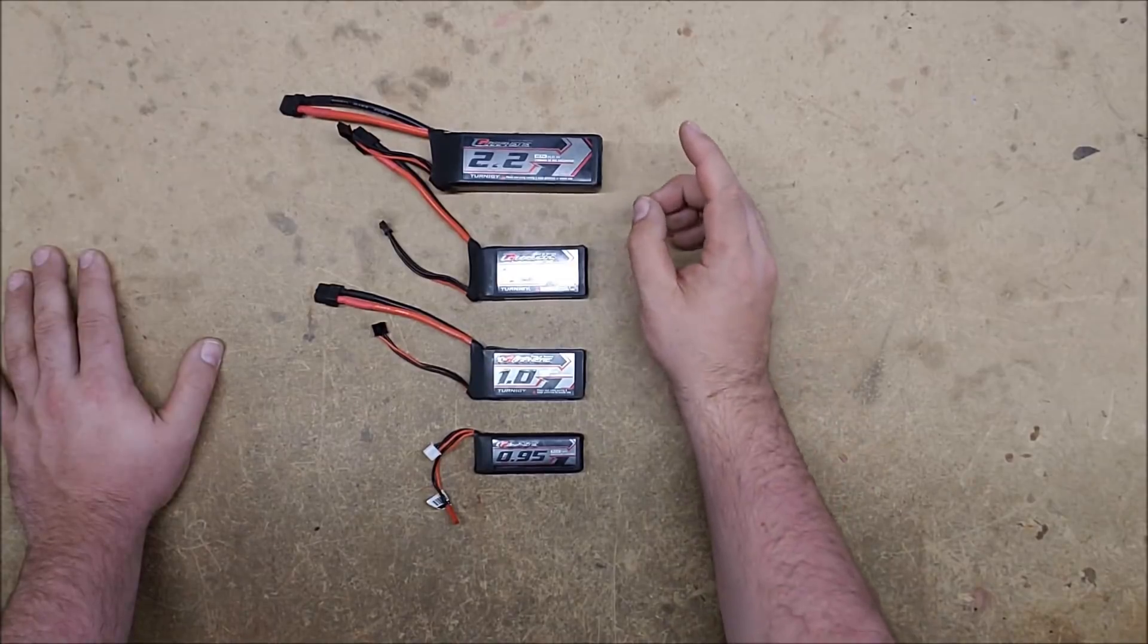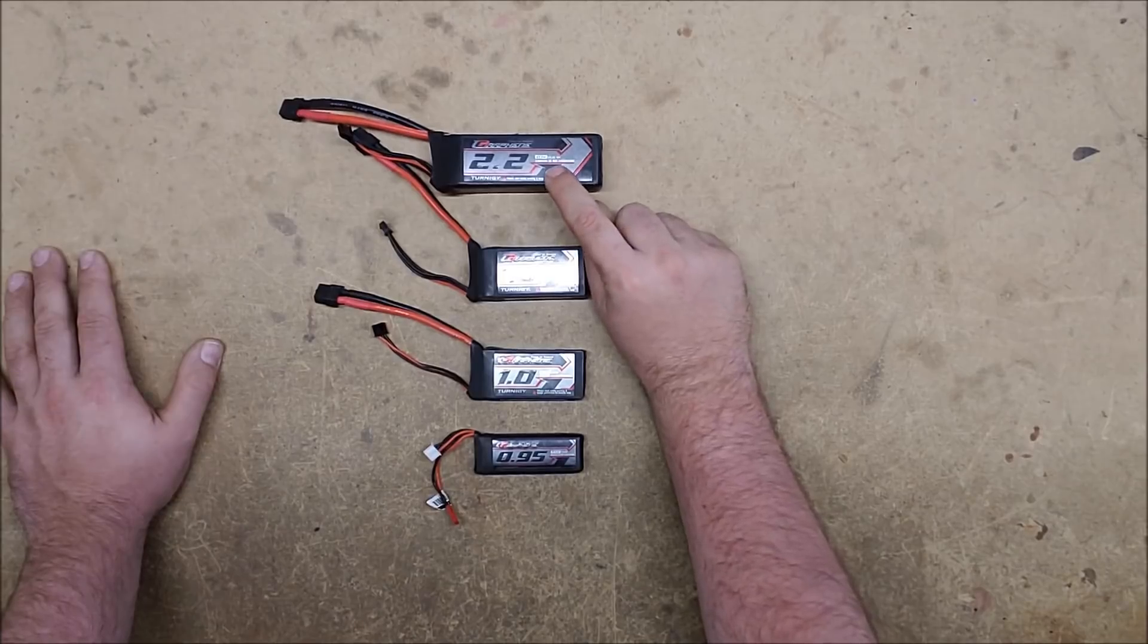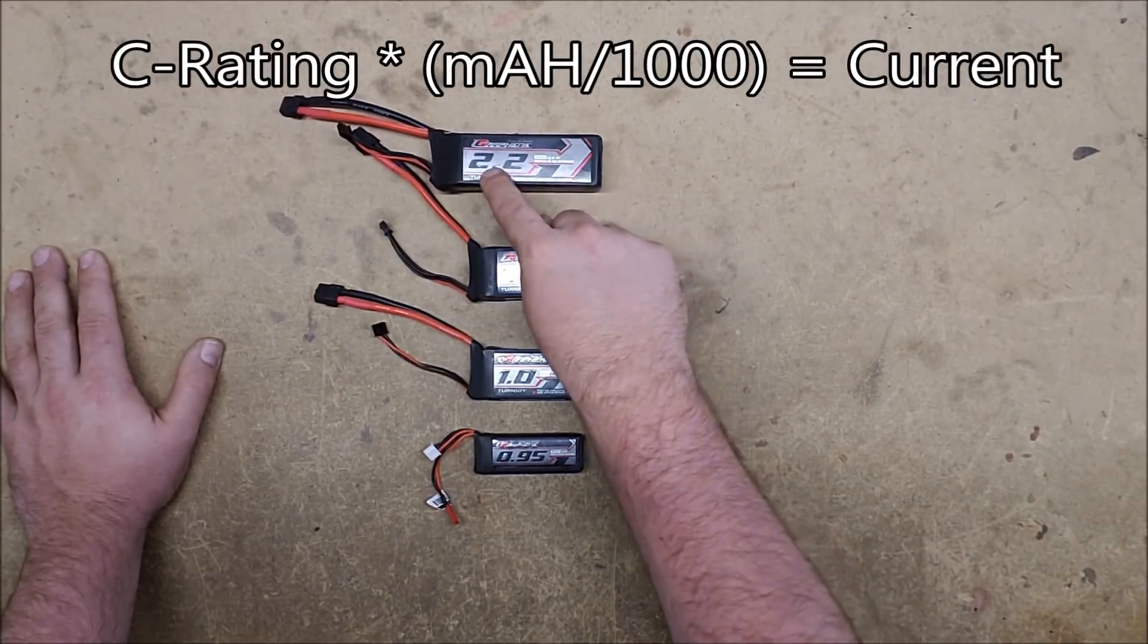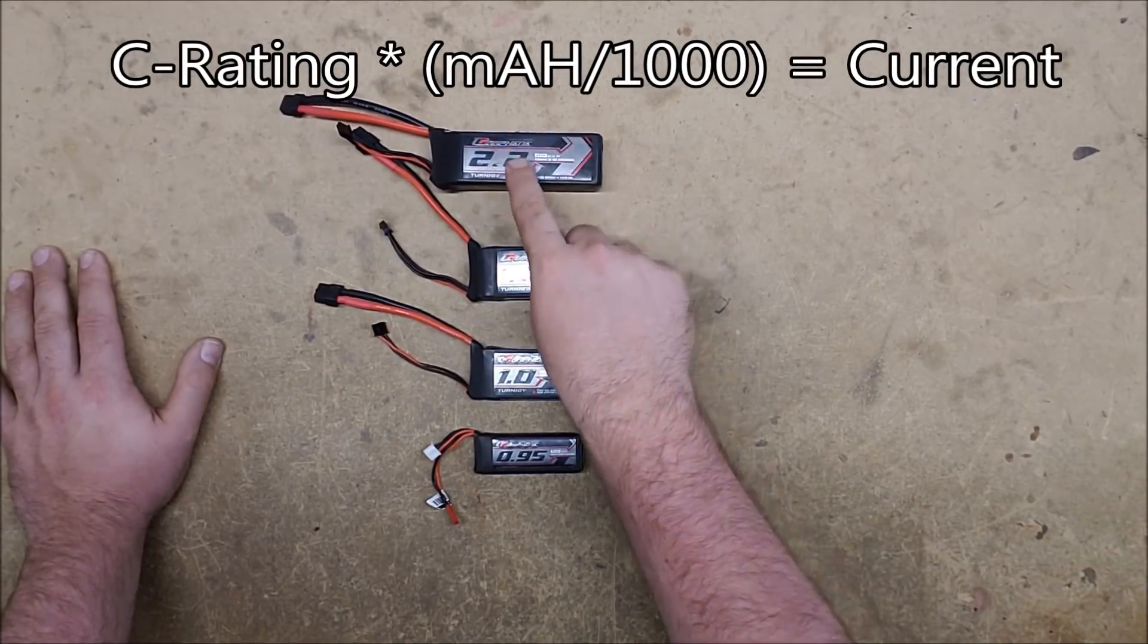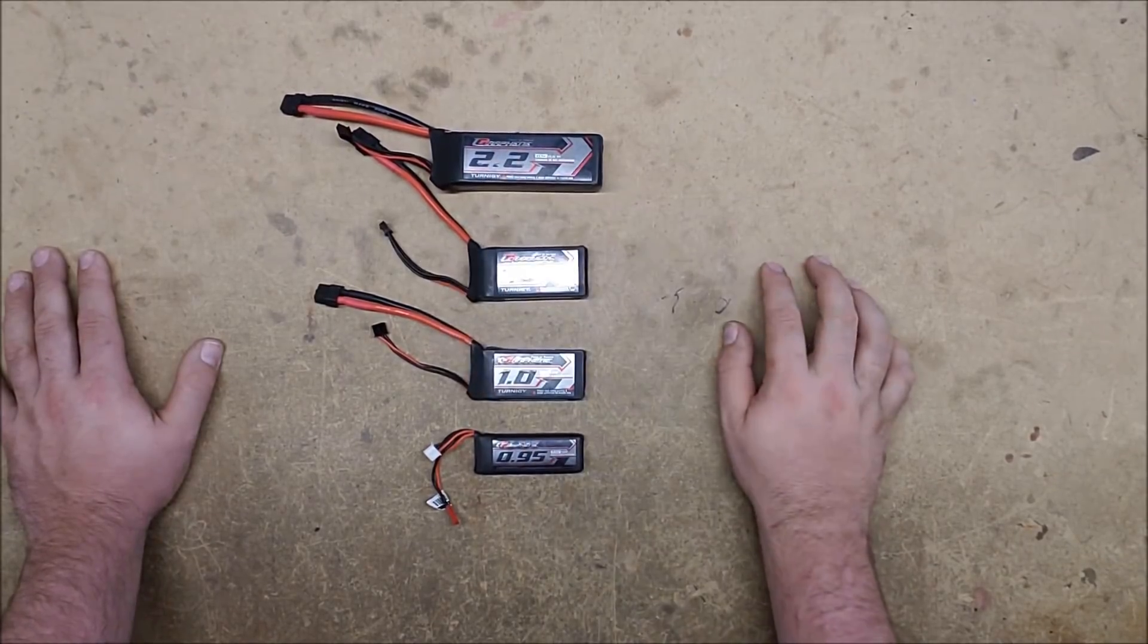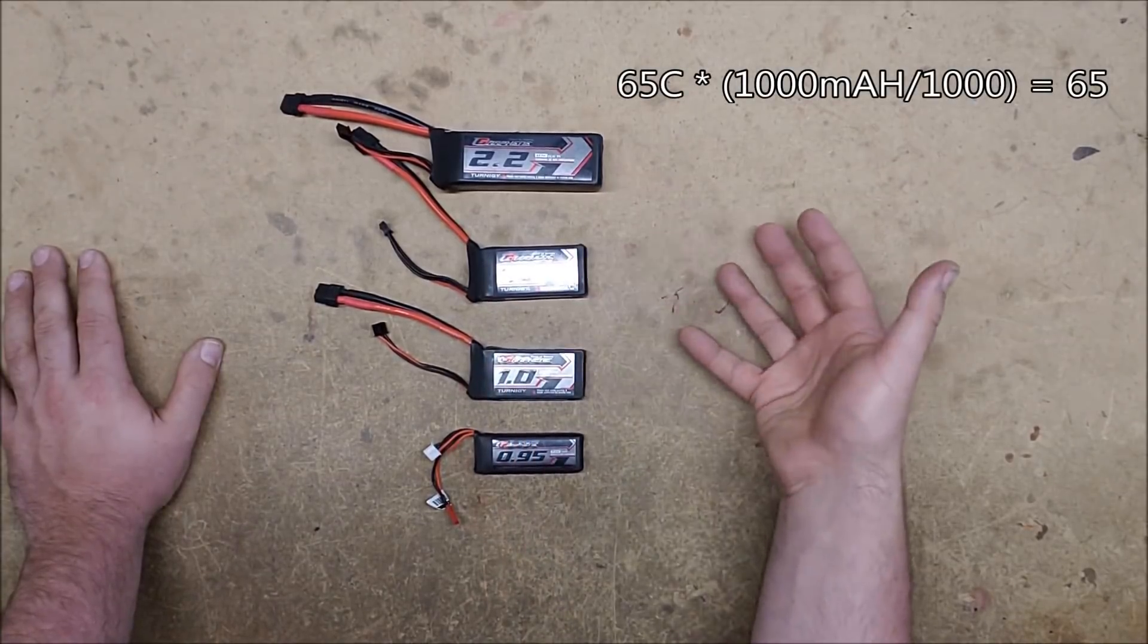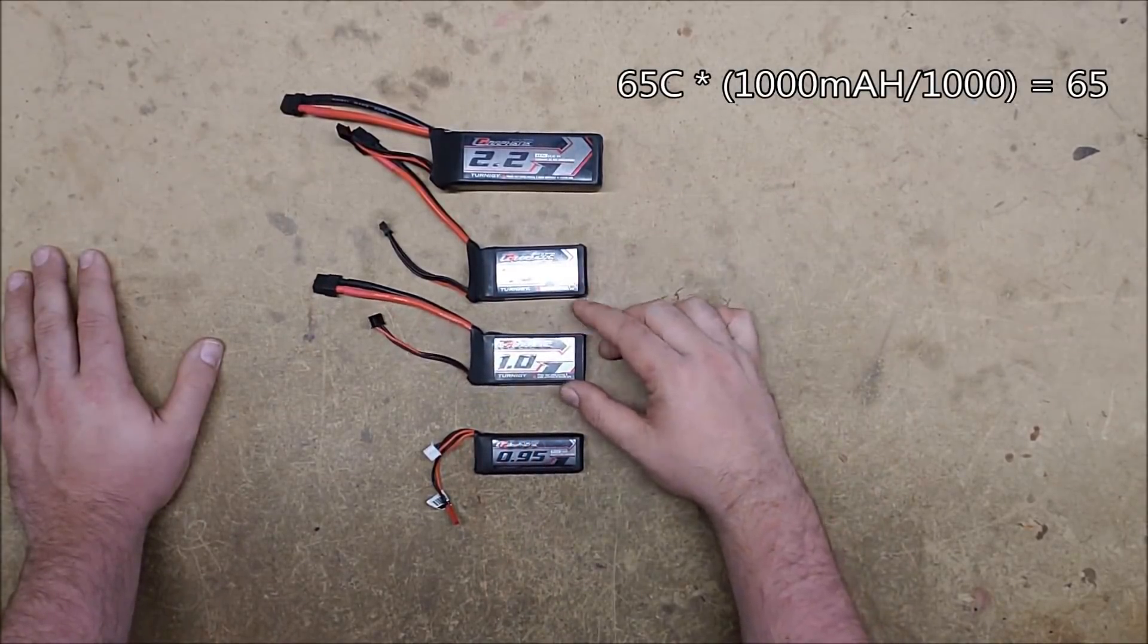To determine the amount of current that a battery can continuously put out, you multiply the C rating times the amp hours. Not the milliamp hours. You're going to divide it by a thousand to get the amp hours and multiply those two together. Now in these ones, it's really easy because it's one. So these both have 65. That is the current that they can produce.